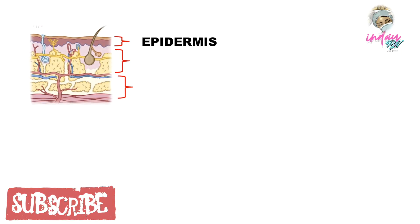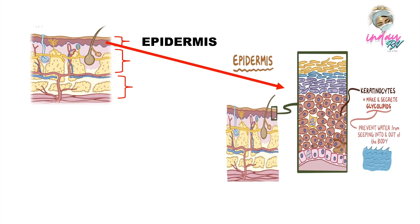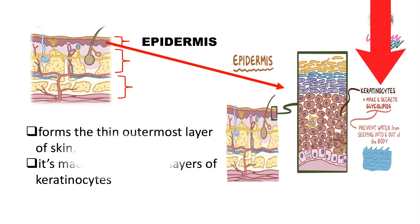The epidermis forms the thin outermost layer of the skin and is made up of several layers of keratinocytes, which make and secrete glycolipids that help prevent water from easily seeping into and out of the body.